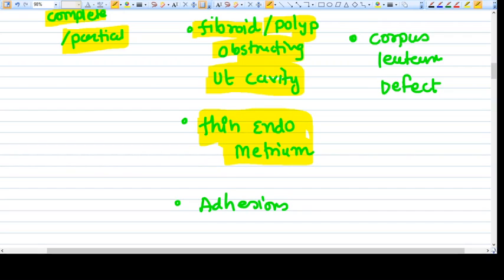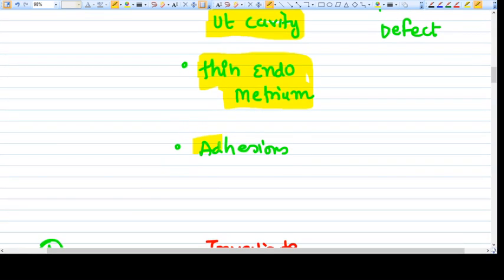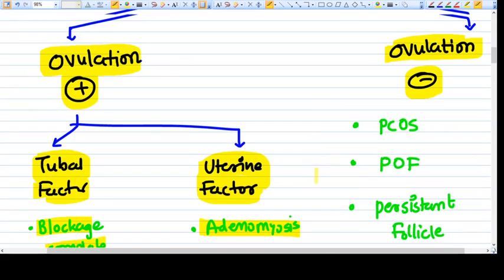The endometrium should be of good thickness to receive the embryo. Then there are uterine adhesions, which can occur due to previous D&Cs and previous intrauterine operative procedures, again causing infertility.